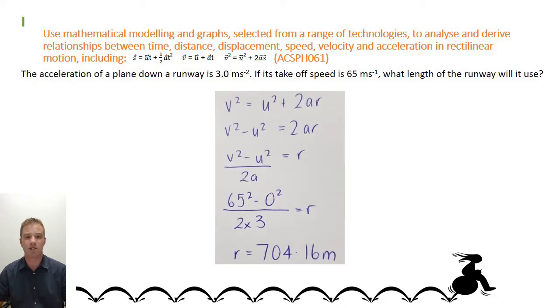Now your final question is: the acceleration of a plane down a runway is 3 meters per second per second. Its takeoff speed is 65 meters per second. What length of the runway will it use? Now this is our third equation.